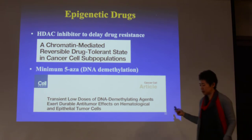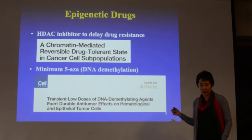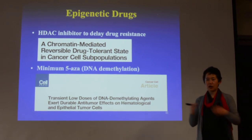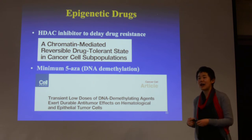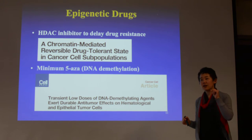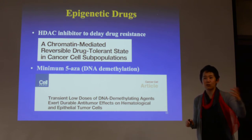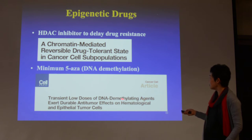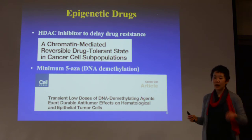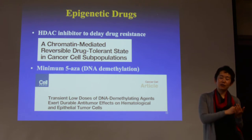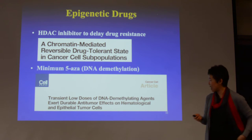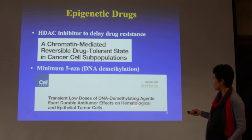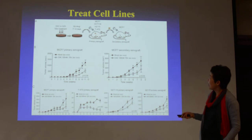Later, Peter Jones' group at the University of Southern California — now at a research institute — in close collaboration with Stephen Bailey at Johns Hopkins, decided to try treating patients transiently with just a third of the dose normally used for MDS. They tried transient low-dose demethylating agent treatment with 5-Azacytidine. Not only did they use very little dose, they also treated briefly, and they observed durable anti-tumor effects on hematological as well as epithelial tumor cells.